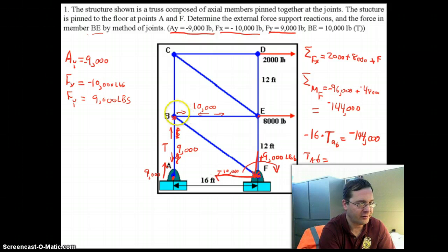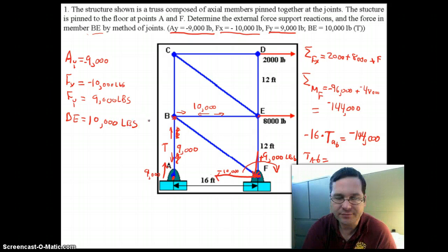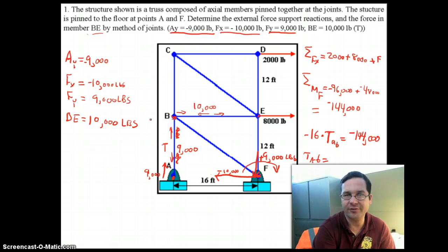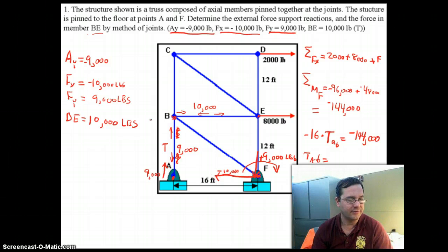And then the tension in member BE is 10,000 pounds. So there you see that by doing some very simple calculations with sum of moments and sums of forces, we were able to develop all of the required forces that the problem asked for.